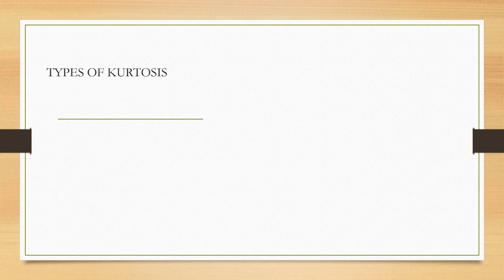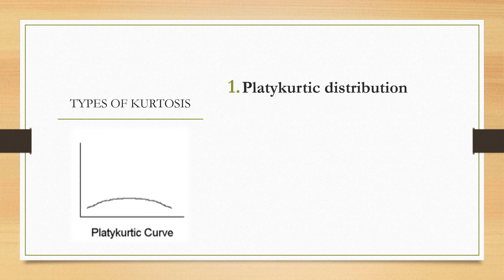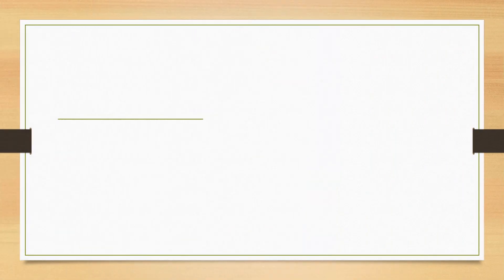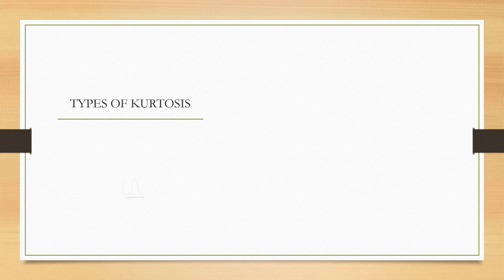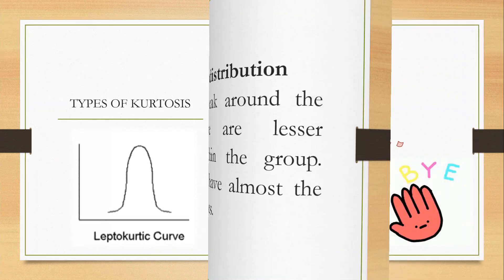Kurtosis are of 3 types. The first one shows flatness, which results from the data being less concentrated around the mean. It signals a heterogeneous group. This is a platykurtic distribution. The second one is similar to a normal distribution. However, there is the tendency for a flattened peak around the mean, noted in a very large group. Last, but not the least, has higher peak around the mean. There are lesser variations within the group. The students have almost the same capabilities. The third one is the leptokurtic distribution.